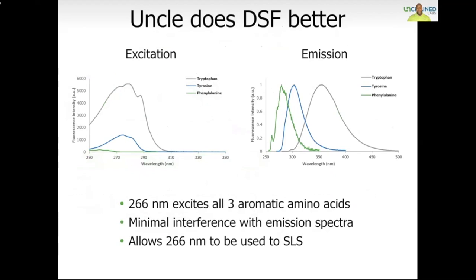Consider what happens if we excite at 280 nm — we would only excite two of the three aromatic amino acids, leaving out phenylalanine. On the emission side, there will also be some interference, since 280 nm cuts directly into the emission of tyrosine. Now consider UNCLE, which excites at 266 nm. This allows us to do three things: first, we're able to excite all three aromatic amino acids; second, we're able to reduce any incidence of interference on the emission side; and third, we have the ability to use that same laser to measure aggregation happening simultaneously as your protein is unfolding. UNCLE excites all three aromatic amino acids with its full-spectrum fluorescence, truly capturing the stability of all of your protein.